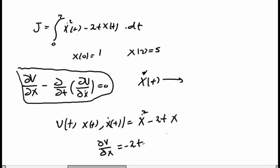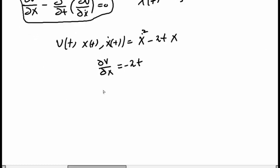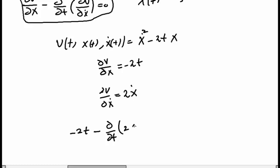We compute the partial derivatives. ∂V/∂x equals −2t. And ∂V/∂x-dot equals 2x-dot. Now we substitute these two into the Euler-Lagrange equation.